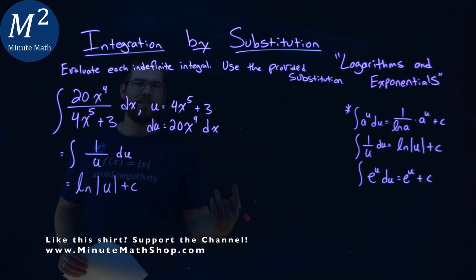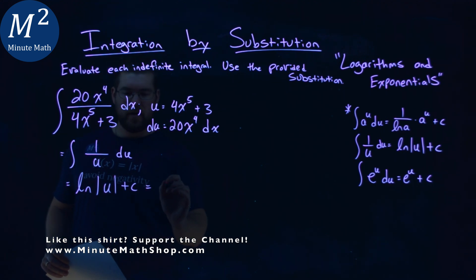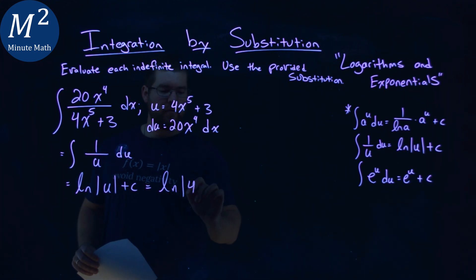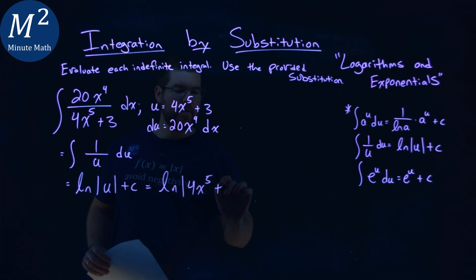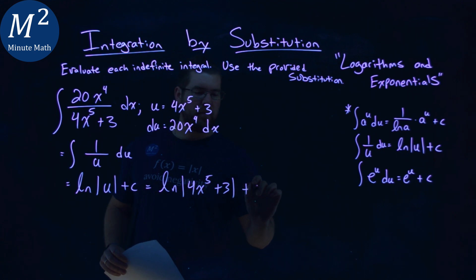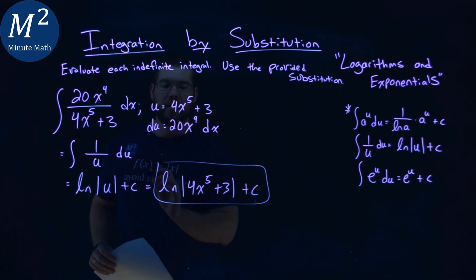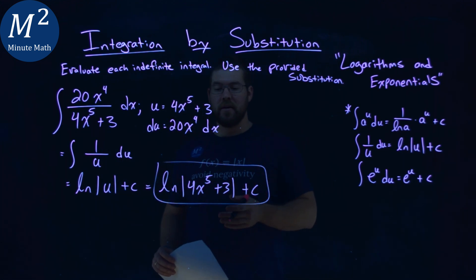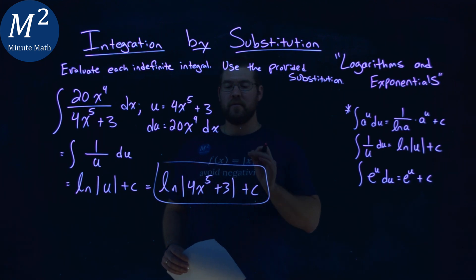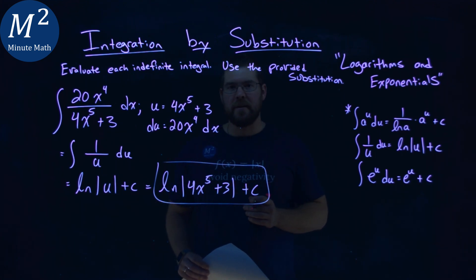And at this point, we can plug back in our u value, so we have the natural log of the absolute value of 4x to the fifth power plus 3, and then all plus c. And so our final answer here is the natural log of the absolute value of 4x to the fifth power plus 3, and then our plus c at the end.